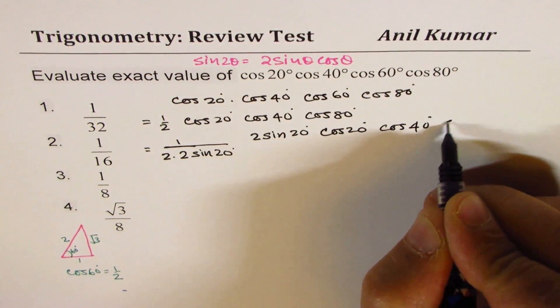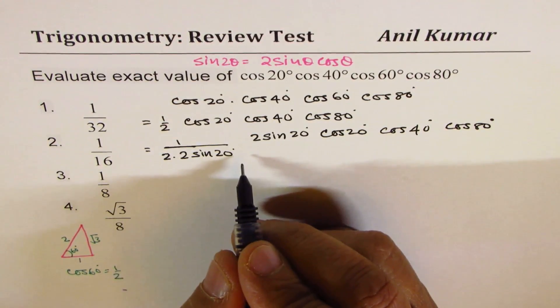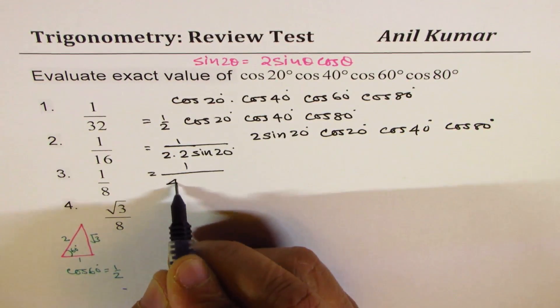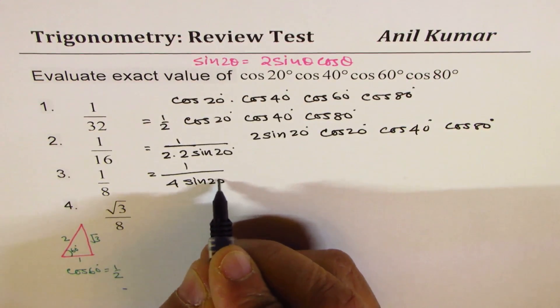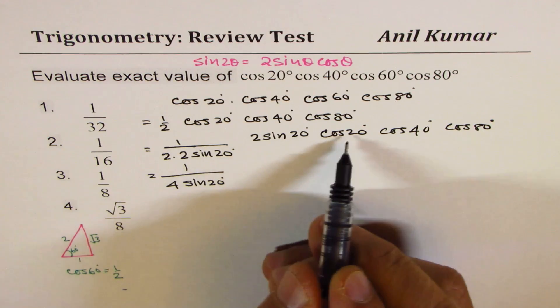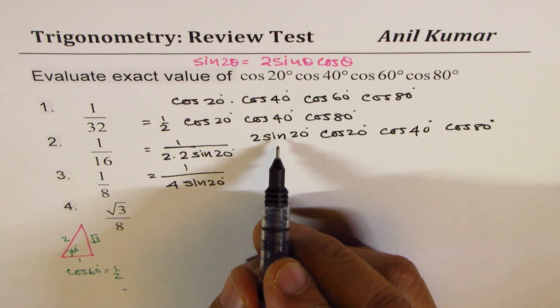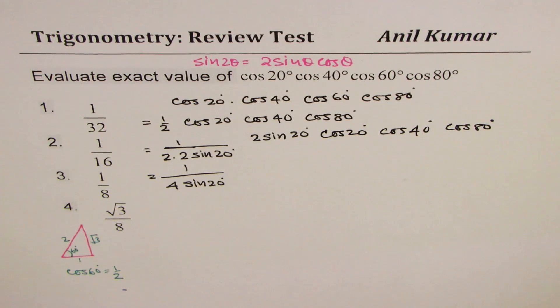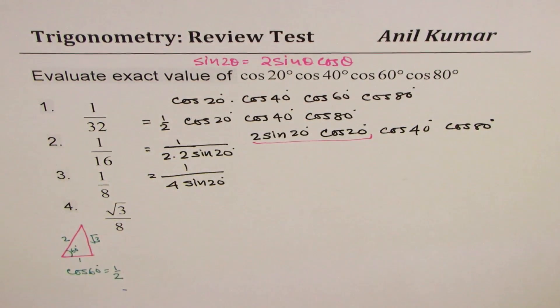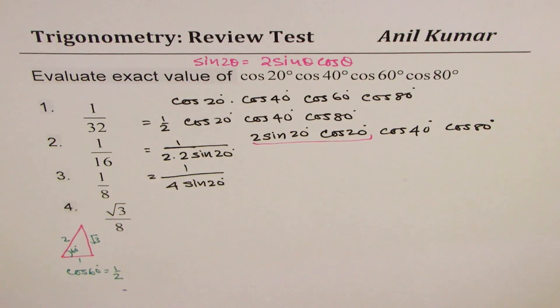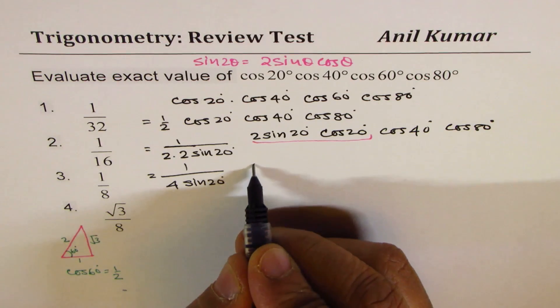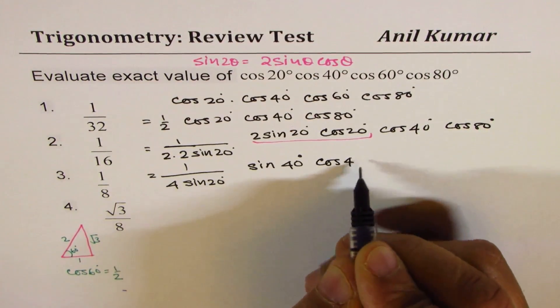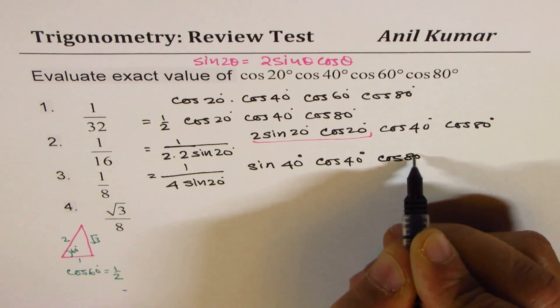You could now write this as 1 over 4 sine 20°, and here we get 2 sine 20° cos 20° which could be written as sine 40°. So now these two terms can be combined. You get sine of 40° and here we already have cos of 40° and cos of 80°.